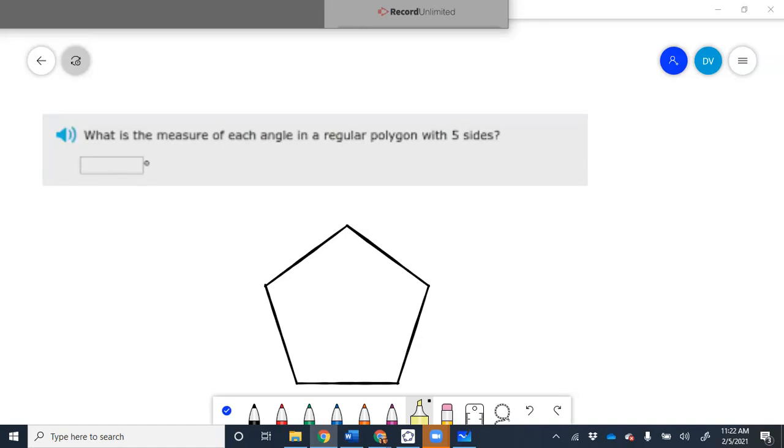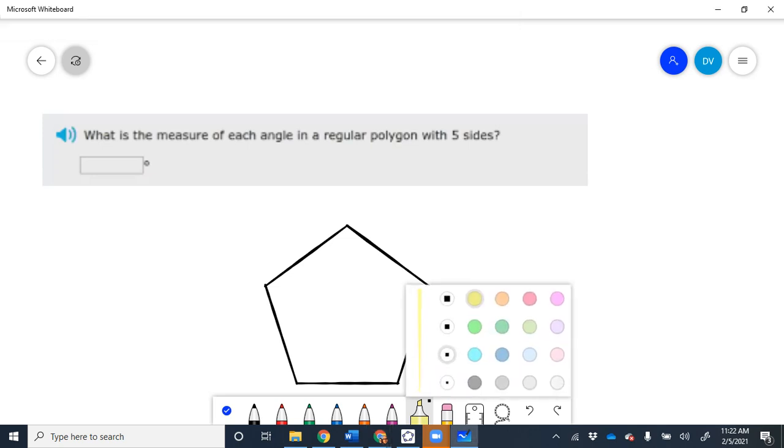This question asks what the measure of each angle in a regular polygon is, a regular five-sided polygon. So do you understand what regular means, this word right here? It means that all the sides and all the angles are equal. We still need the formula.